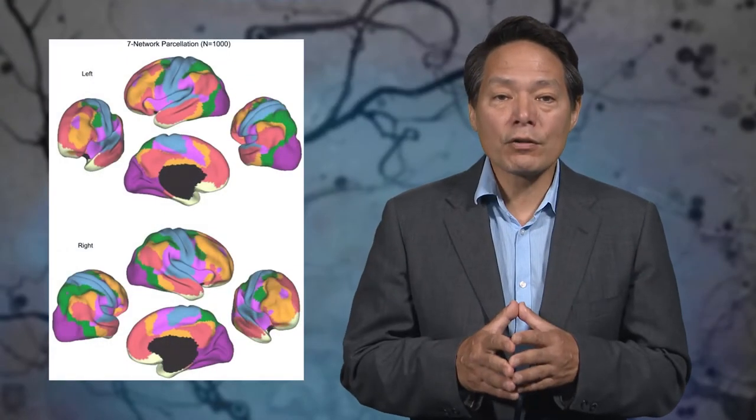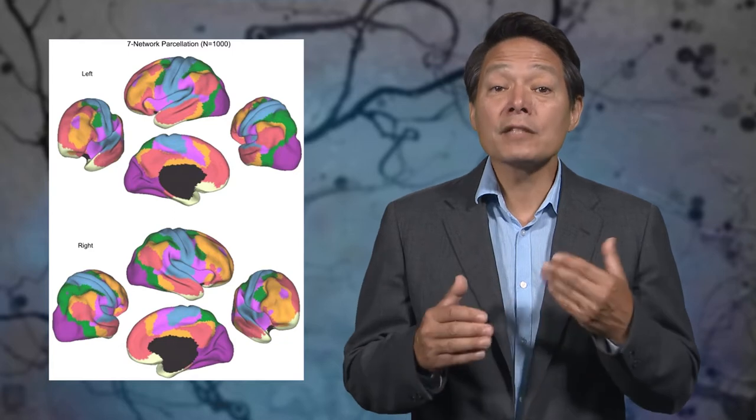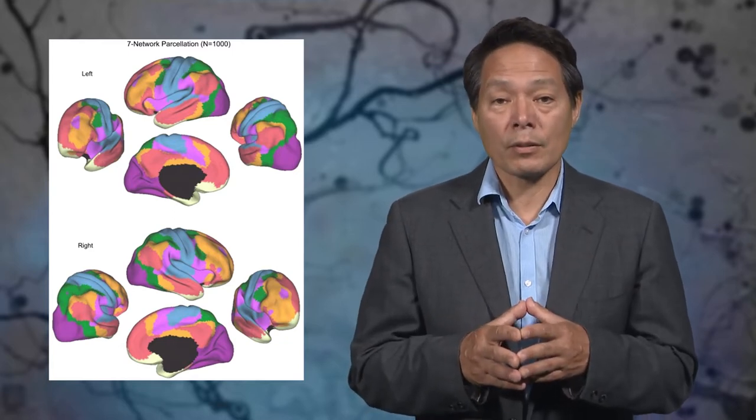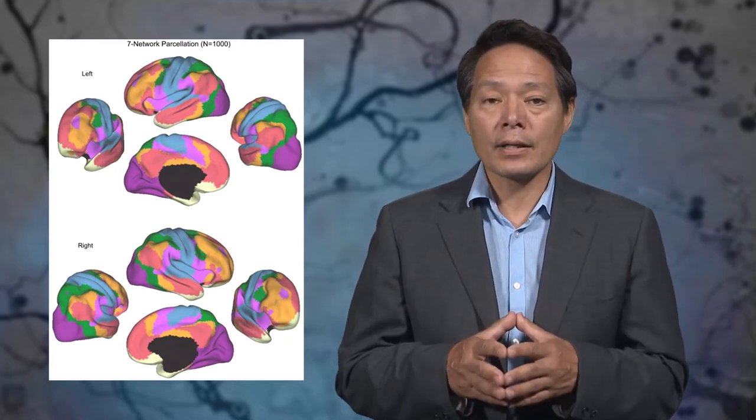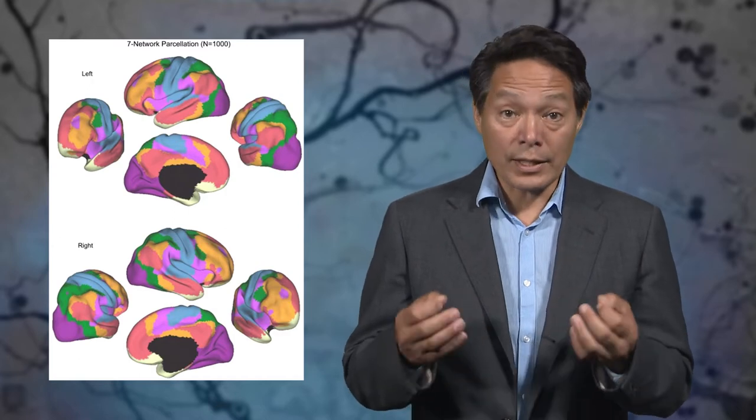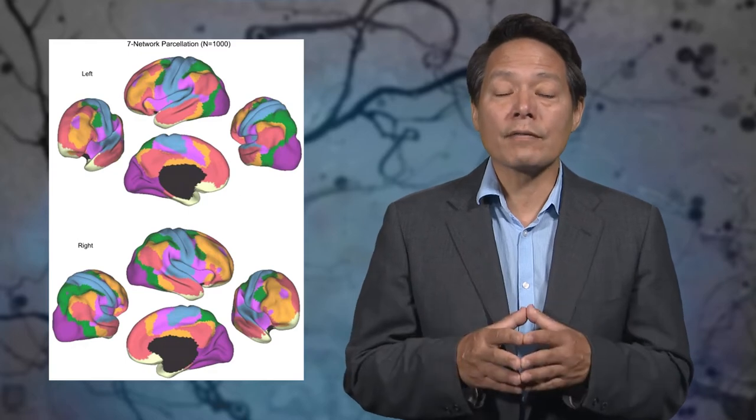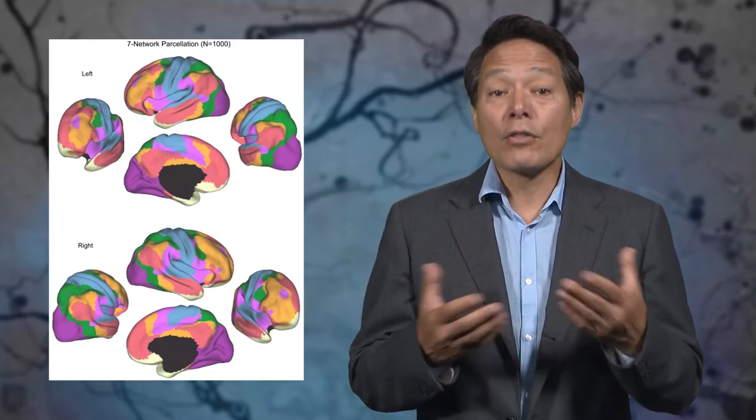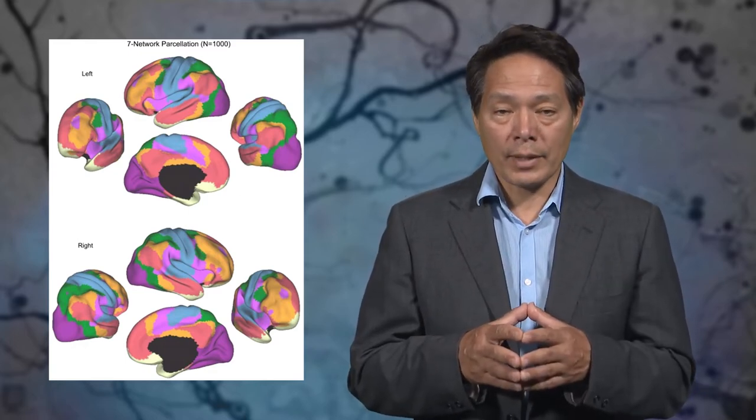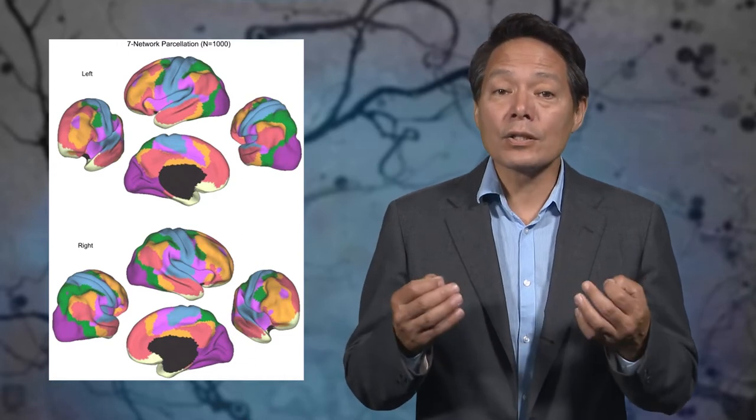Now granted, this is a very crude parcellation of the brain. Much finer parcellations of neural circuitry are possible and have been carried out. And certain circuits are simply not shown here. For example, the many non-cortical circuits involved in reward are not visible in this view of the cortex, though reward plays a central role in our behavior and thinking.